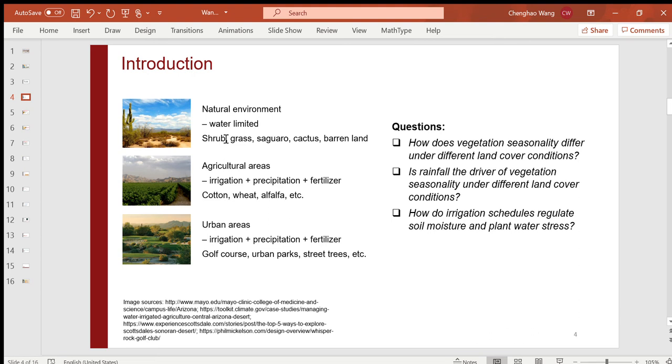In this study, I used remote sensing datasets and numerical simulations trying to answer the following three questions. How does vegetation seasonality differ under different land cover conditions? Is rainfall the driver of vegetation seasonality under different land cover conditions? How do irrigation schedules regulate soil moisture and plant water stress? The findings of this study will inform better planning of irrigation to promote vegetation growth and heat mitigation.